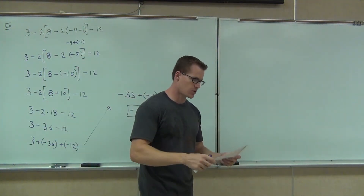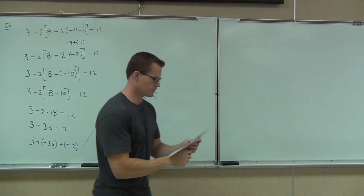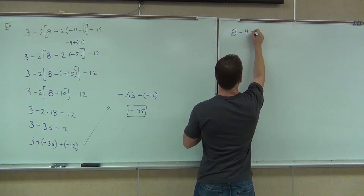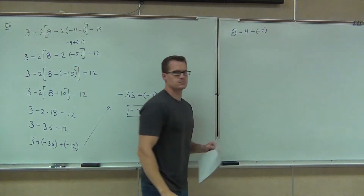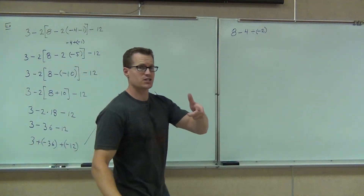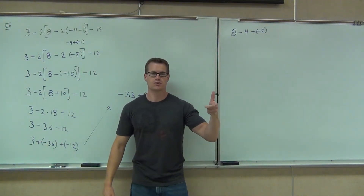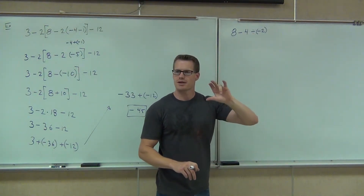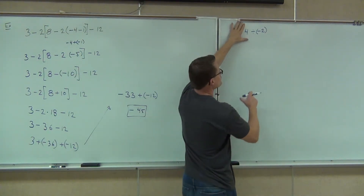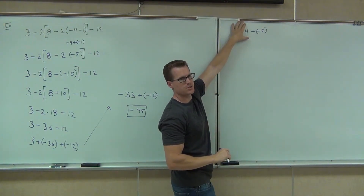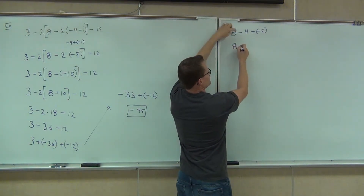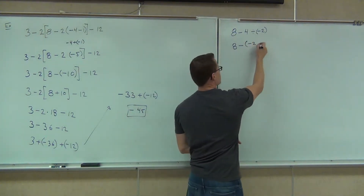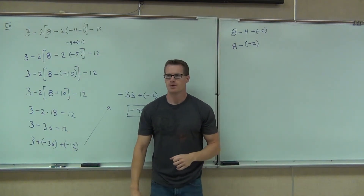Okay, we're going to keep going on this and start building these problems up a little bit. We'll do a couple more together, then I'll give you three to do on your own. First thing I do is subtract — true or false? False. Good. So what we're going to do on this problem is ignore everything else but the little part you're working with. How much is 4 divided by negative 2? Negative 2. So we're going to write the 8, write the minus, and then write the negative 2 — putting parentheses to signify that it's a negative.